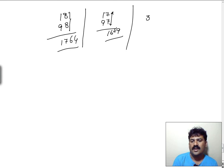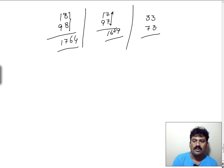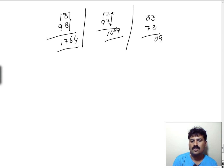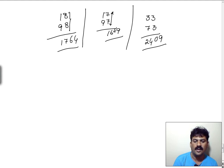Another: 33 into 73 — the condition is applicable. 3 into 3 is 09. And 7 into 3 plus 3 — 21 plus 3 equals 24. So 2409 is the answer.